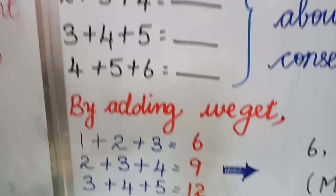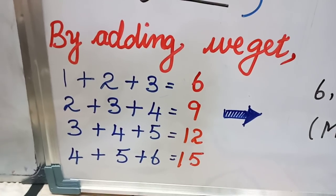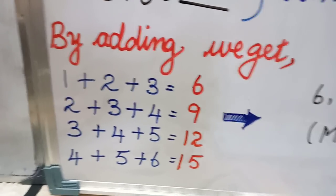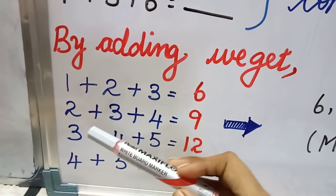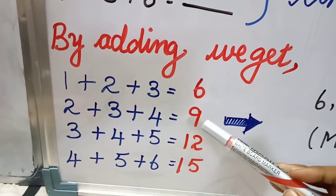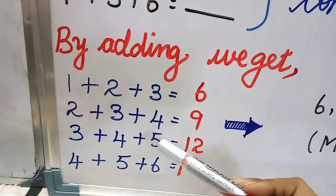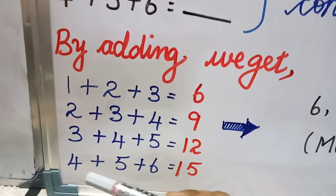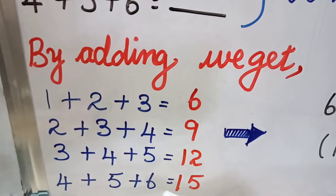So here we go by adding: we get 1 plus 2 plus 3 is equal to 6, 2 plus 3 plus 4 gives you 9, and 3 plus 4 plus 5 gives you 12, and 4 plus 5 plus 6 gives you 15.